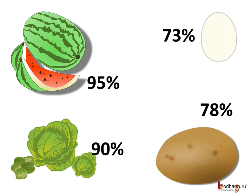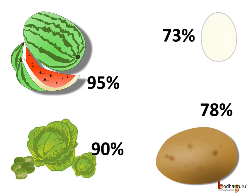So let us see what all we eat. In the summer we eat watermelon to stay cool. You know, 95% of the watermelon is just water. Water is one of the main components of every kind of food — like the egg, which has almost 73% water.